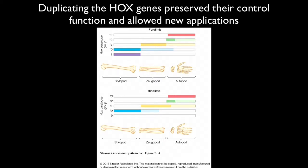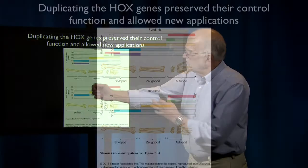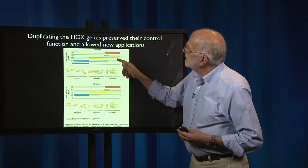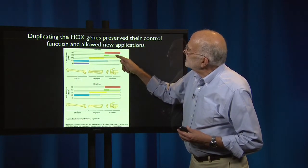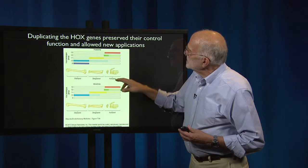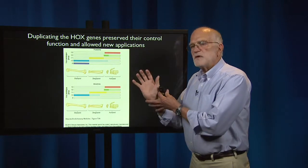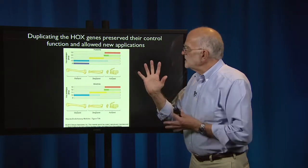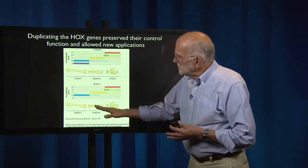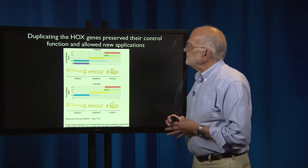If Hox 9 and 10 are on, it is saying: make a humerus. If 10 and 11 are on, it's saying: make a radius and an ulna. And if 11, 12, and 13 are on, it's saying: make wrists and digits. And similarly in the hind limb.